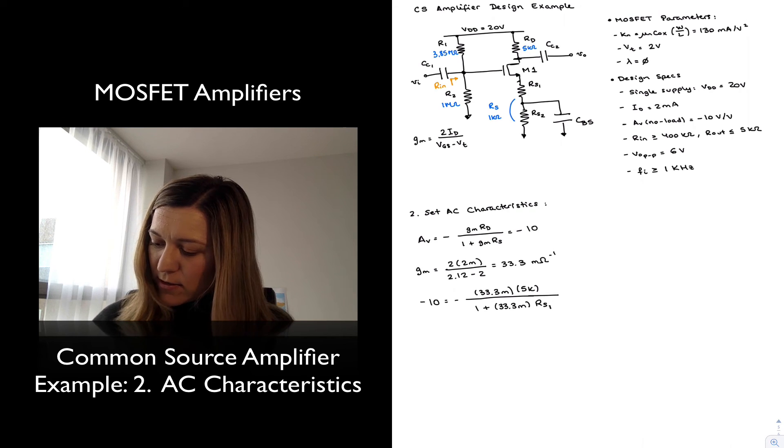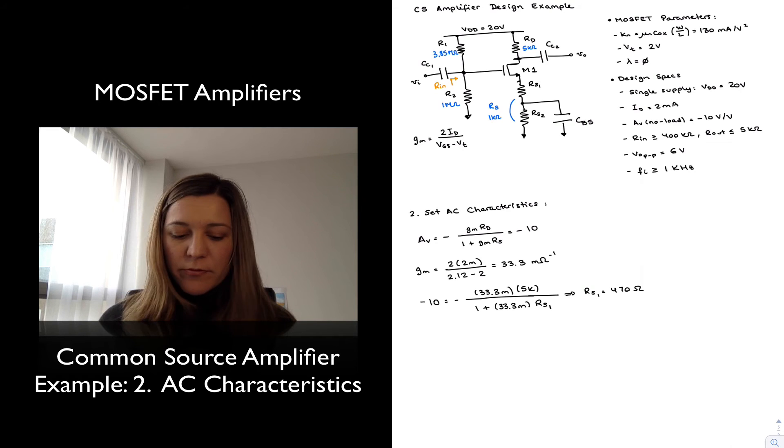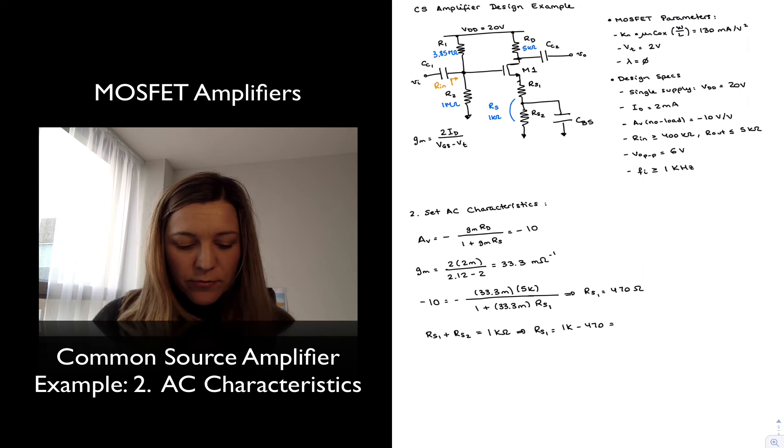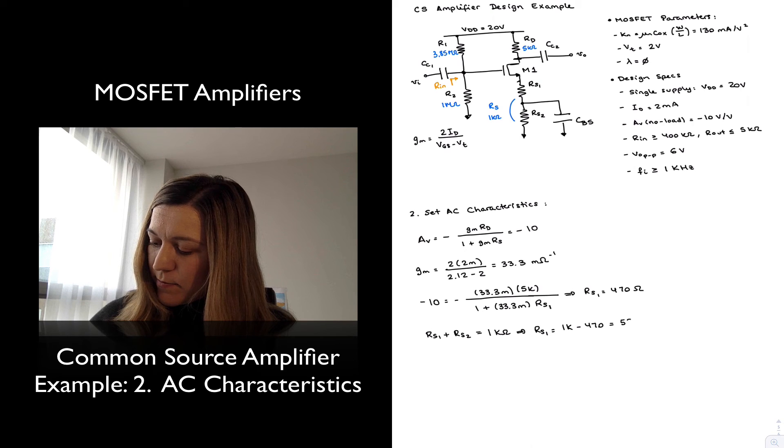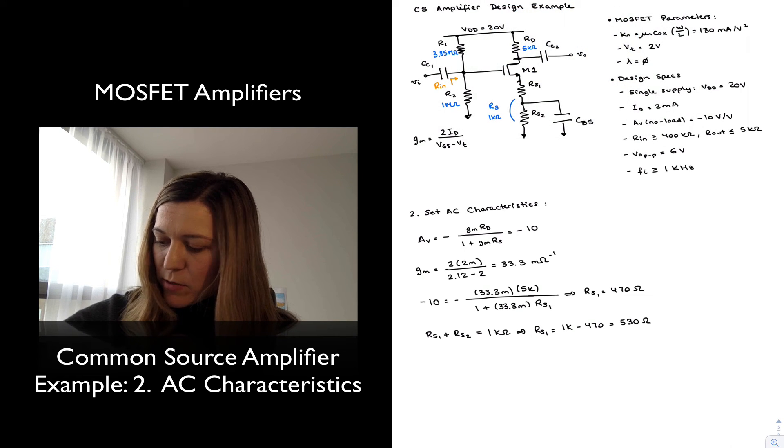So if I do that, I get that my RS1 is equal to 417 Ohms. Now remember, I need for RS1 plus RS2 to be equal to 1 kOhm. And so from here, I can solve for RS1, which is going to be 1k minus 470 or 530. So I can now say RS1 is equal to 470 Ohms, and RS2 is equal to 530 Ohms.